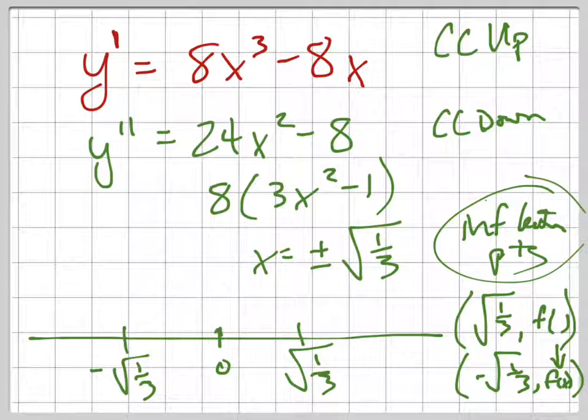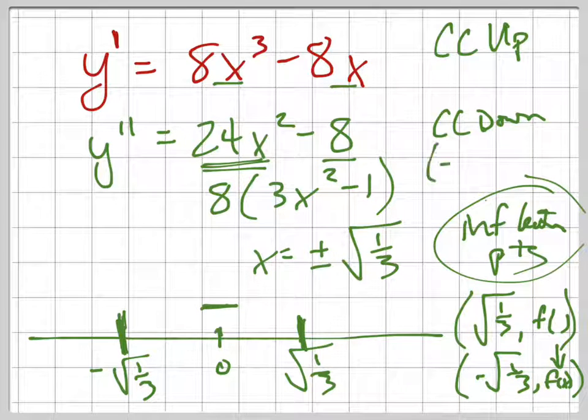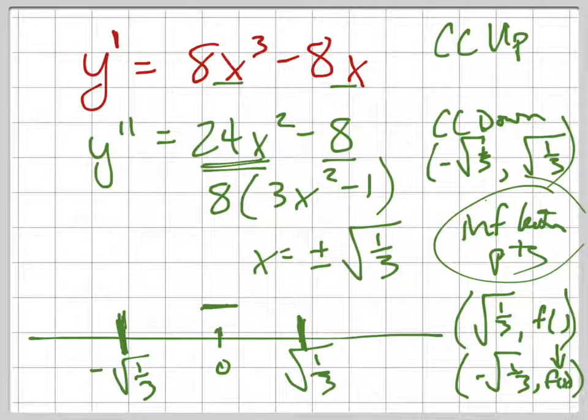Well, I know 0 is between there, so let's check out 0 right here. Alright, if I plug in 0, I'm sorry, into my double derivative, not my derivative, into my double derivative, I get a negative value. So it's concave down from negative square root of 1 third to positive square root of 1 third. And then let's pick a value over here. How about 1? 1 is easy to plug in. If I plug in 1 here, what do I get? Positive or negative? It's positive. And if I plug in negative 1 here, what do I get? Also positive.